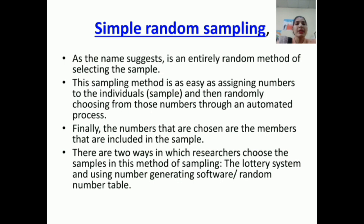Simple random sampling, as the name suggests, is an entirely random method of selecting the sample. This sampling method is as easy as assigning numbers to the individuals and then randomly choosing from those numbers through an automated process.